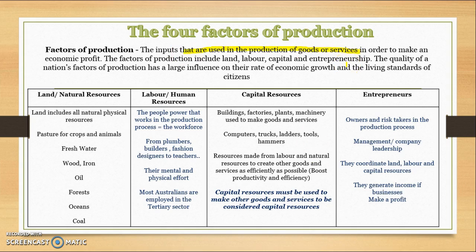The factors of production include land, labour, capital and entrepreneurship, and the quality of a nation's factors of production will impact the living standards of citizens. We looked at that when we played the game in class where each country got given different factors of production, whether that was paper, scissors, compasses or protractors. Each of these factors of production are limited and we need to make choices about how we're going to use them to maximise our living standards.